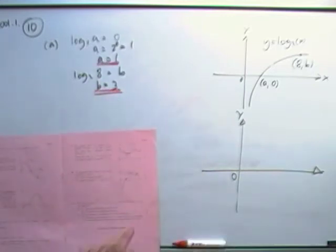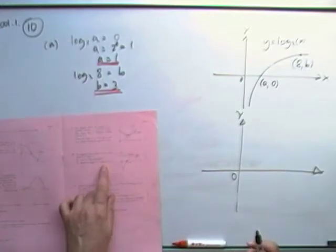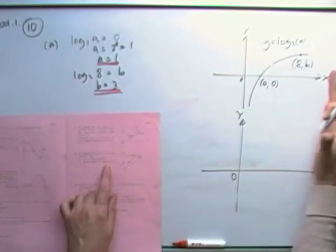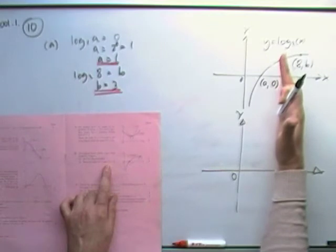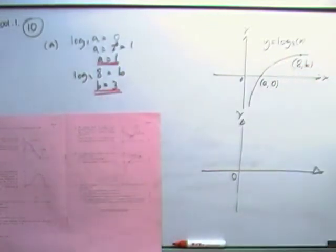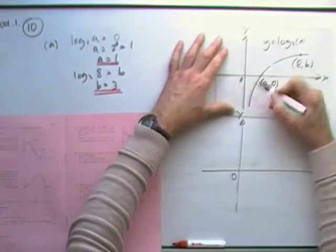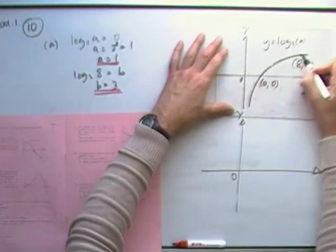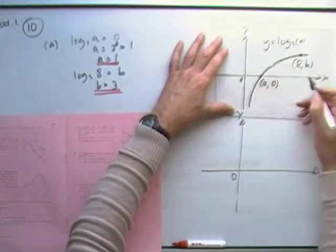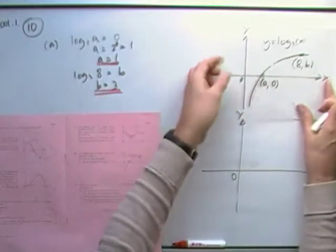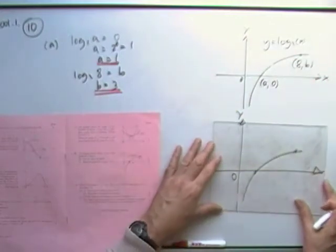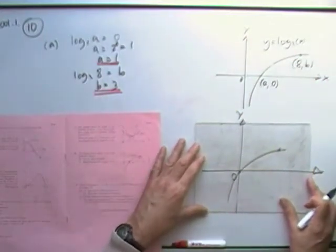Second part says sketch the graph of this transformation. x plus 1, that means it shifts back 1, and then overall back down 3. So this graph's going to move. You've got this graph, which is going through these two points here, and that's meant to be just one away from the origin, which means that it's going to move back 1, and then down 3.